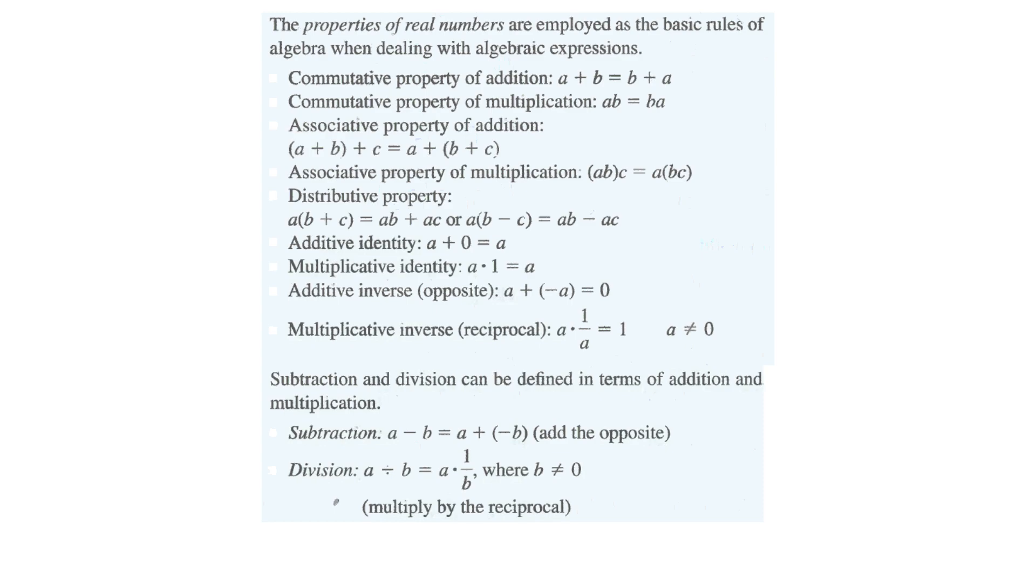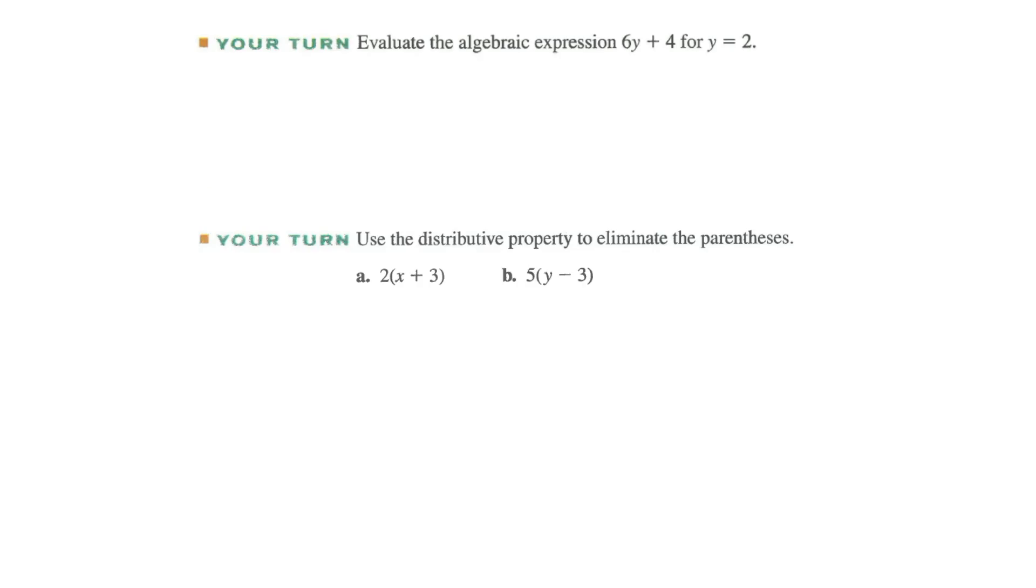We have all the properties of real numbers listed here. You probably have seen these before in algebra. I'm not going to go through every single one here, but the big ones that we really need to talk about are the distributive property. So distributive property, 5 times 8 minus 3. That 5 gets to distribute into both places. So we would have 40 minus 15, and we would end up with 25. Now we obviously could have done the order of operations first. 5 times 8 minus 3 is 5, and got 25 as well. We're going to distribute a lot this year.